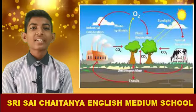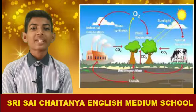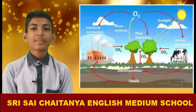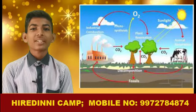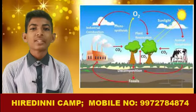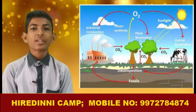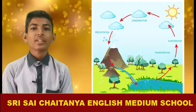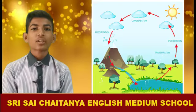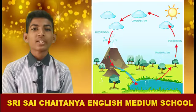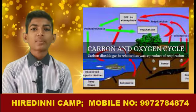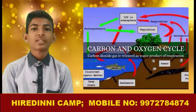The sun's energy, along with water and carbon dioxide, is used by the plants to make their food. The food prepared by the plants is eaten by animals and human beings. Animals and human beings give out carbon dioxide into the atmosphere, and this carbon dioxide is absorbed by the plants.